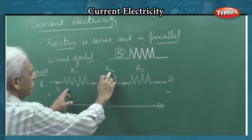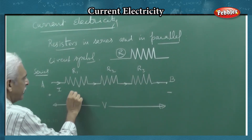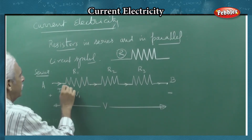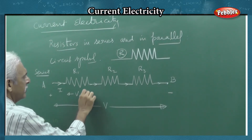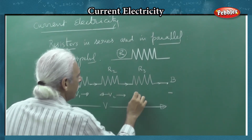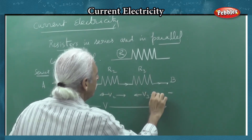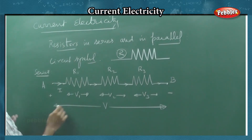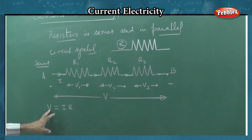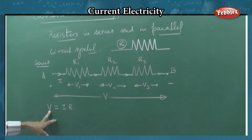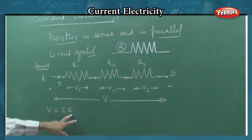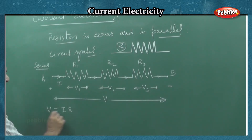Now, resistance values are different, but current is the same. Then automatically, the potential drop or difference across each of the resistors is different — V1, V2, and V3. Why do we say different? Using Ohm's law. Ohm's law gives you the expression: the potential difference or drop across any resistance is the current flowing through the resistance times the resistance. So, V equals IR.